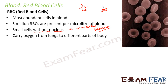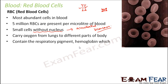They carry oxygen from lungs to different parts of the body. Their red colour is due to the presence of the red pigment called hemoglobin. Hemoglobin helps in the transport of oxygen by formation of oxyhemoglobin. It contains the respiratory pigment hemoglobin which has affinity for oxygen. In a healthy adult, there is almost 12 to 16 grams of hemoglobin present in every 100 millilitres of blood.